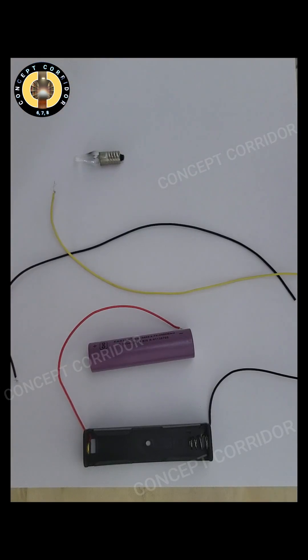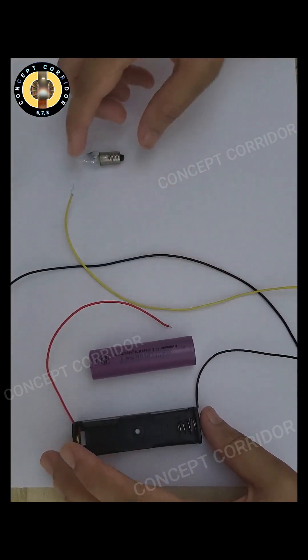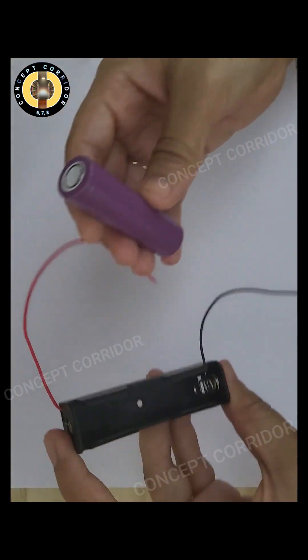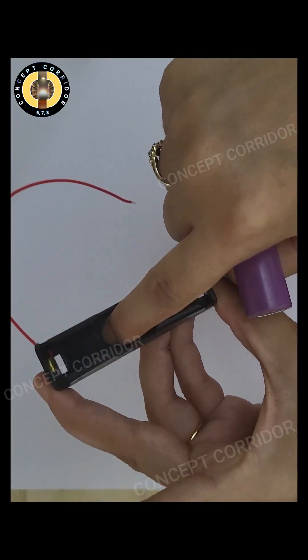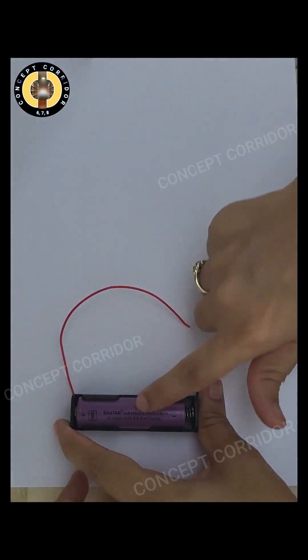Now, let's construct the circuit for the torch bulb. For this, I will require one cell holder, 3.5V cell, some wires and torch bulb. Insert the cell in the cell holder according to the marking given on the cell holder. This is the positive terminal and here is the negative terminal of the cell.